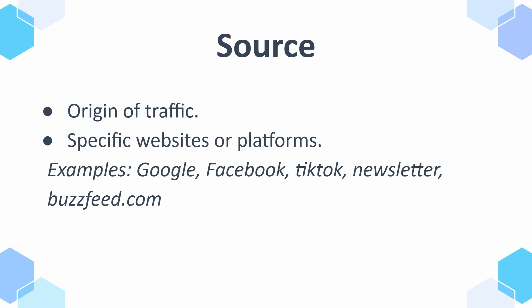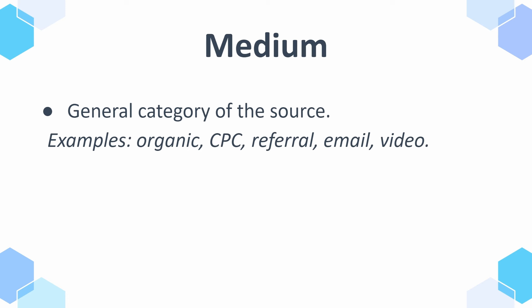Then we have a dimension called source, which is basically the origin of traffic — specific websites or platforms. Examples can be Google, Facebook, TikTok, newsletter, or buzzfeed.com, depending on where they're coming from. Then we have medium, which is the general category of the source — examples are organic, CPC, referral, email, video, and so on.